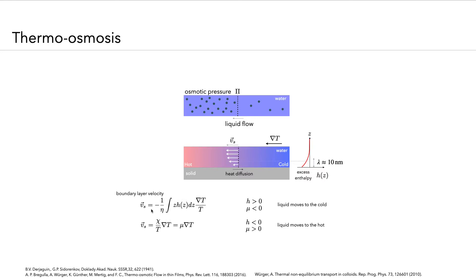Since this expression is quite complicated to write every time, you can abbreviate it: the slip velocity is proportional to the temperature gradient and a mobility coefficient mu, which expresses everything contained in that integral over the excess enthalpy. Whenever that mobility coefficient is bigger than zero, the liquid moves along the direction of the temperature gradient — from cold to hot. If mu is negative, it moves from hot to cold. This solely depends on the sign of the excess enthalpy: if the excess enthalpy of liquid-solid interaction is smaller than zero, it moves to the hot side; if bigger than zero, it moves to the cold.